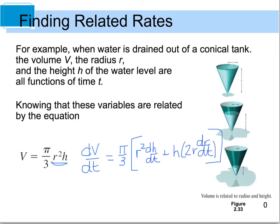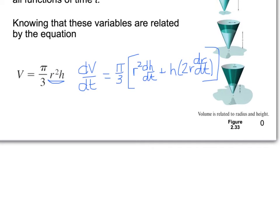When we simplify this, we end up with dV/dt is equal to pi over 3 times r squared dh/dt, plus 2rh dr/dt.